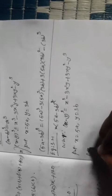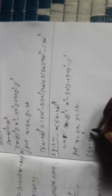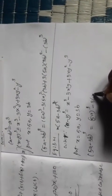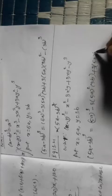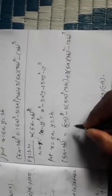(5a - 3b)³ = (5a)³ - 3·(5a)²·(3b) + 3·(5a)·(3b)² - (3b)³. Next, we evaluate each term.